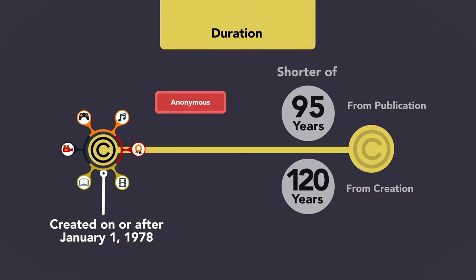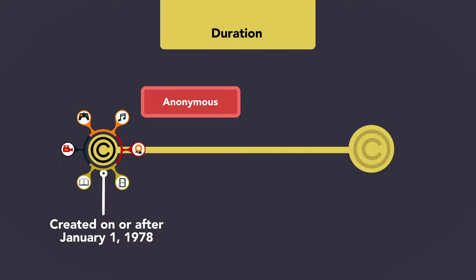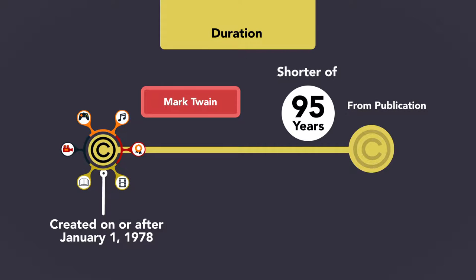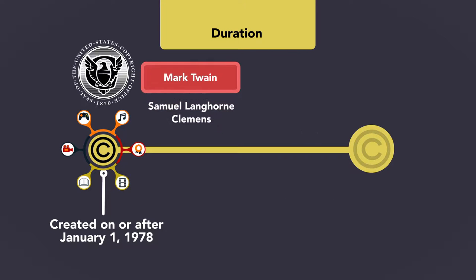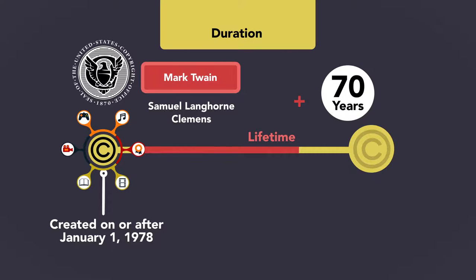If a work is created anonymously or under a pseudonym, the term of the copyright is the same as a work for hire: 95 years from the first publication, or 120 years from creation. However, if the identity of the author is known to the Copyright Office, then the copyright term will be the lifetime of that person plus 70 years, even if it is published under a pseudonym.